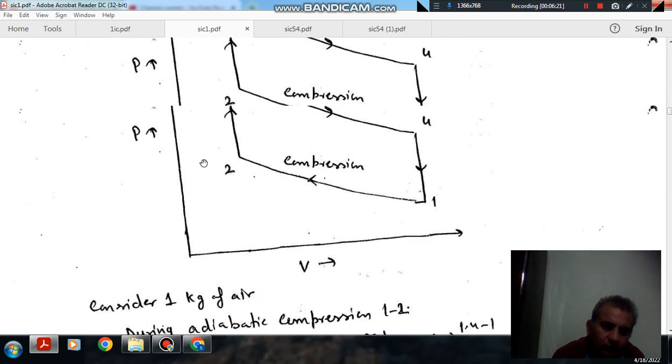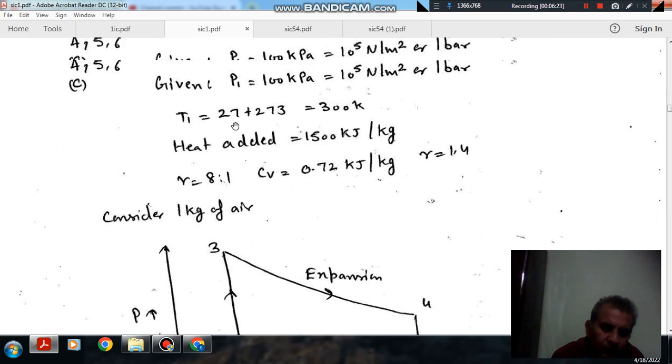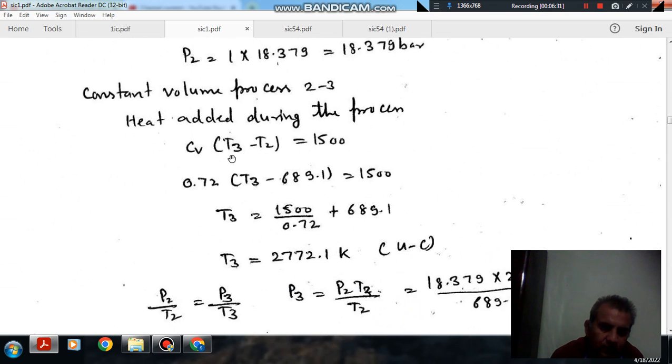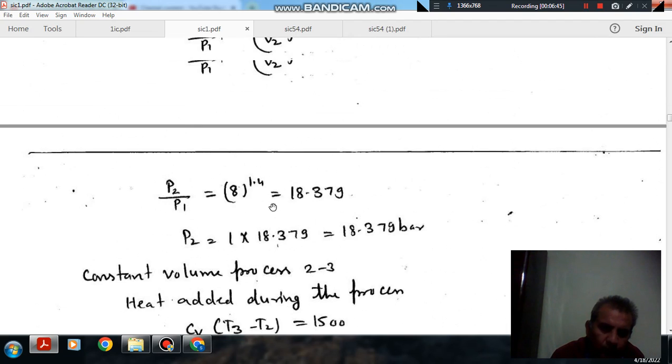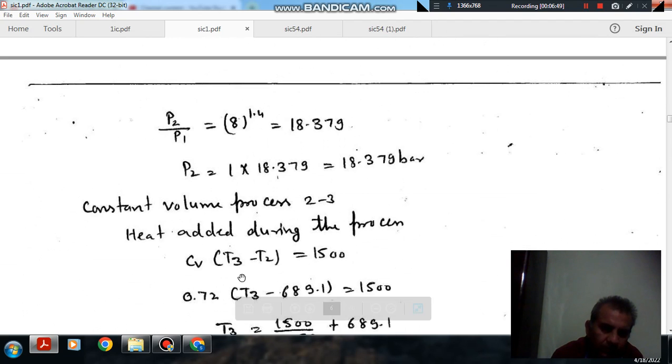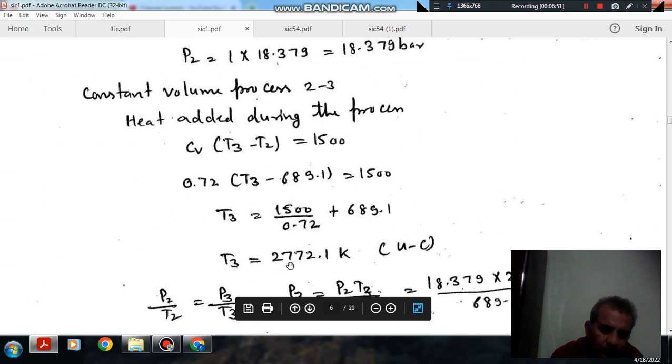So next process is constant volume process and the heat addition during this process is 1500 kJ per kg. So heat addition during this process Cv times T3 minus T2 is equal to 1500. And Cv is 0.72 and T2 we have found out that is 688.1. So from this we can find out T3.